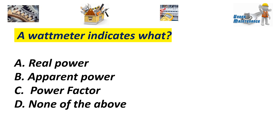A wattmeter indicates what? A. Real power. B. Apparent power. C. Power factor. D. None of the above. Answer A. Real power.